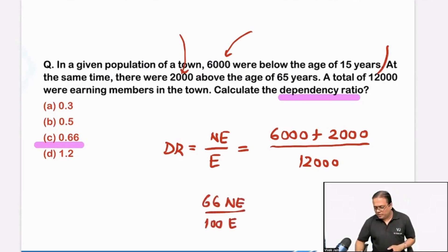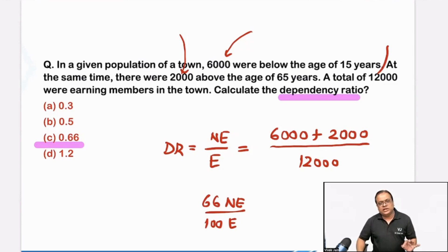So we can call it as 66 non-earning depend on 100 earning for survival. We took the same example in main videos and mission classes also — answer came 0.66.